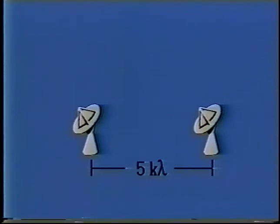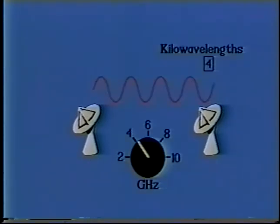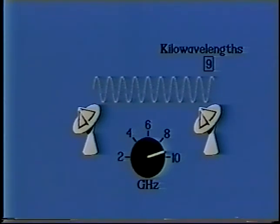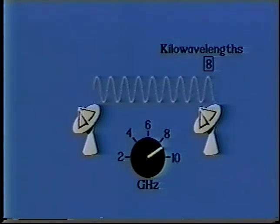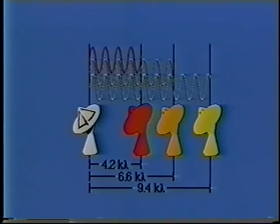To illustrate, let's draw a wave with each cycle representing one kilowavelength. Five kilowavelengths is then represented by five cycles. By tuning to different observing frequencies, a single physical baseline can have many different baseline lengths measured in kilowavelengths. A 300-meter baseline observing at 4.2, 6.6, and 9.4 gigahertz is equivalent to three baselines of corresponding length.